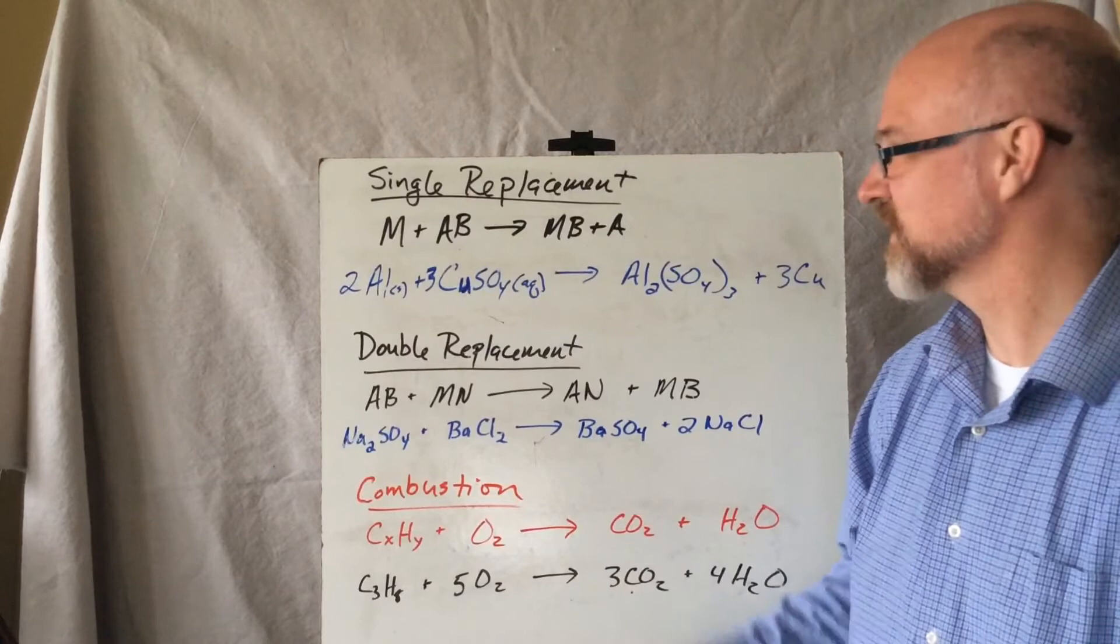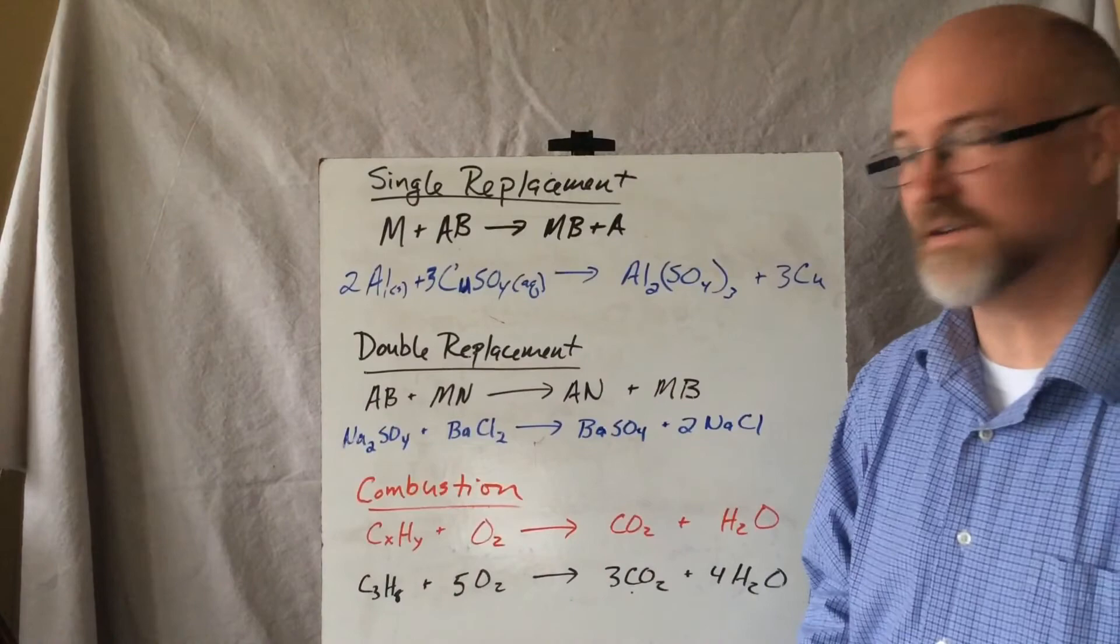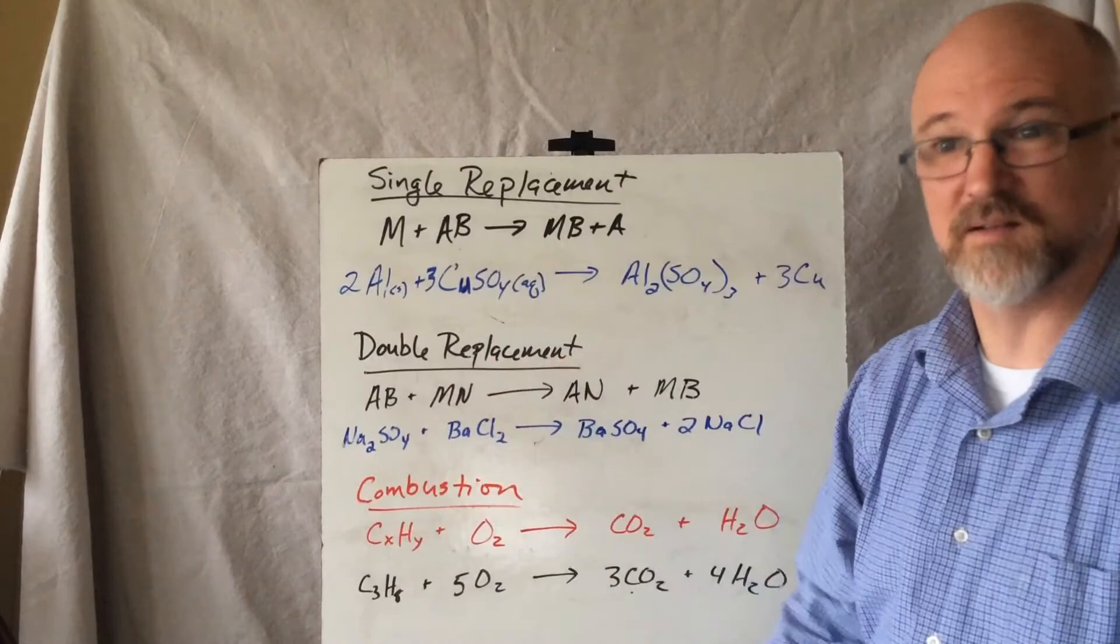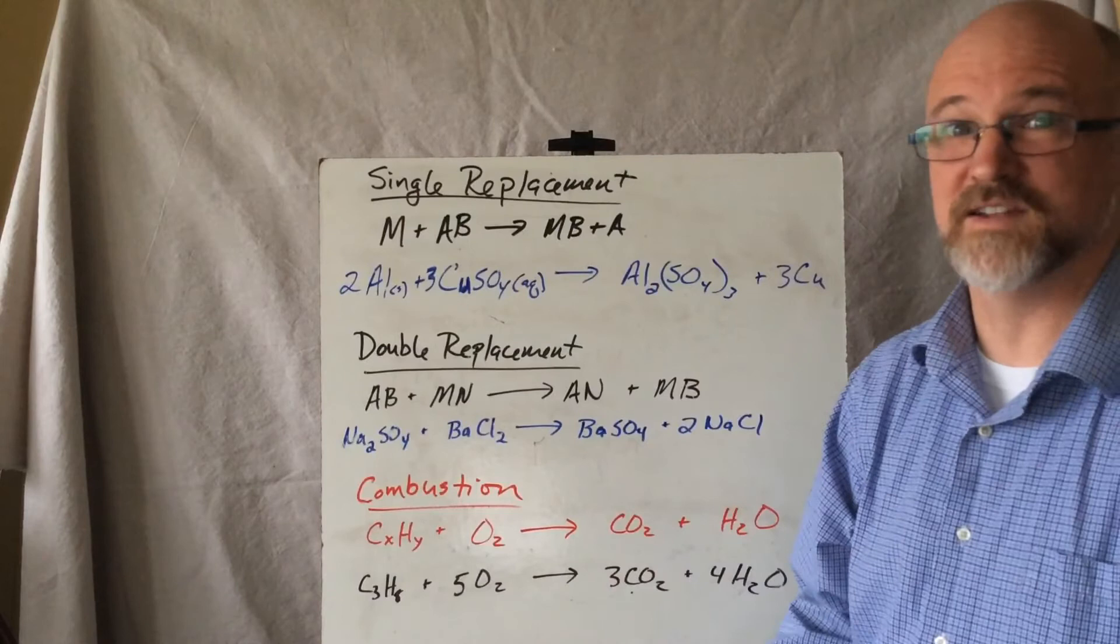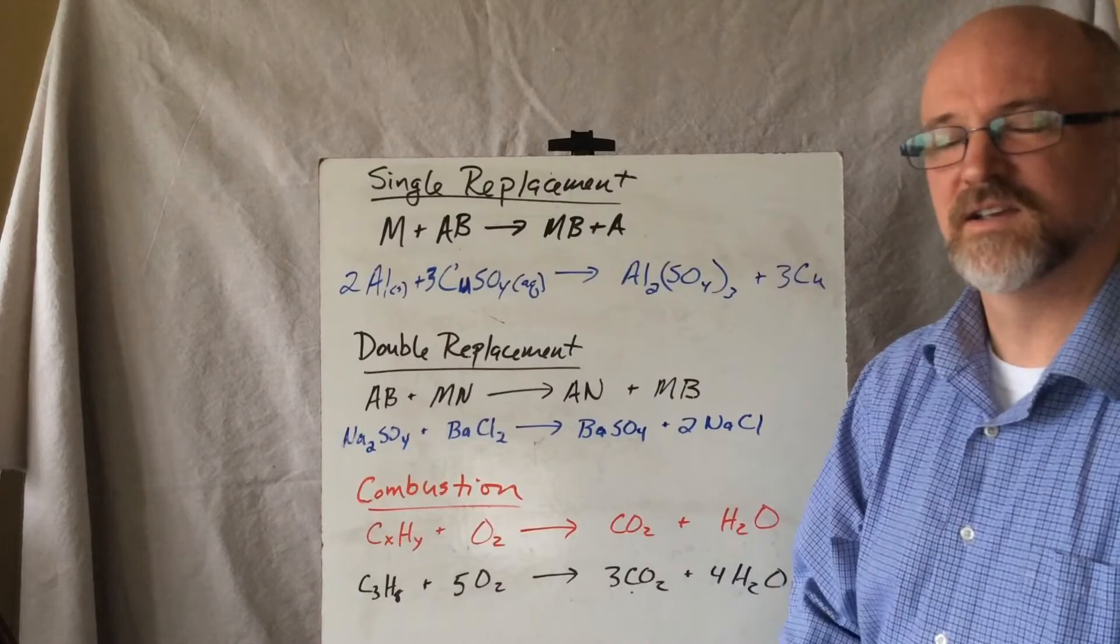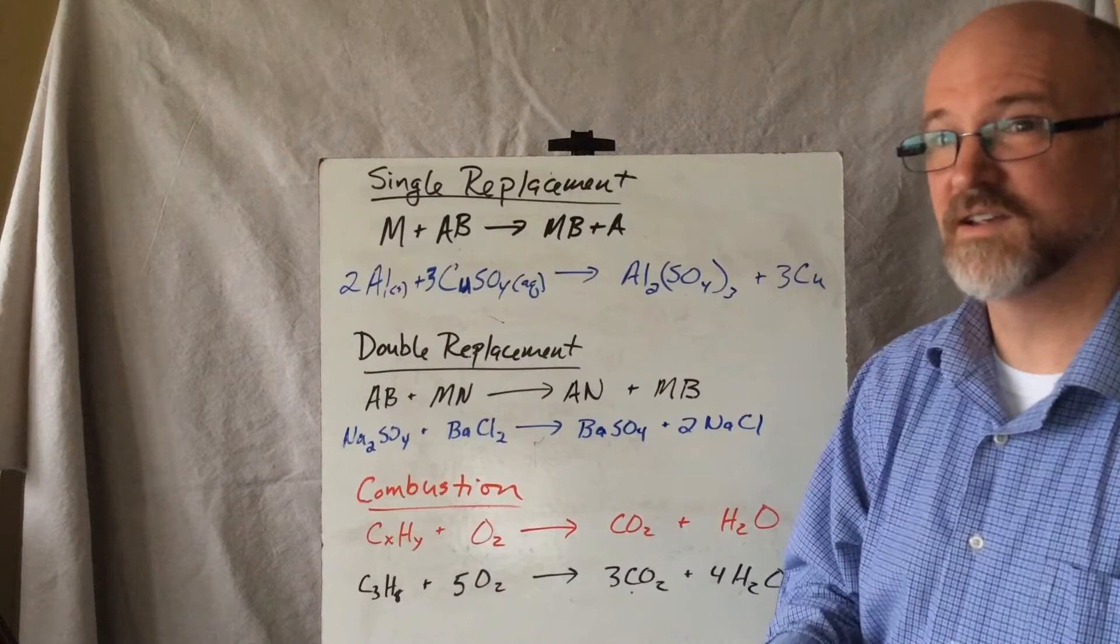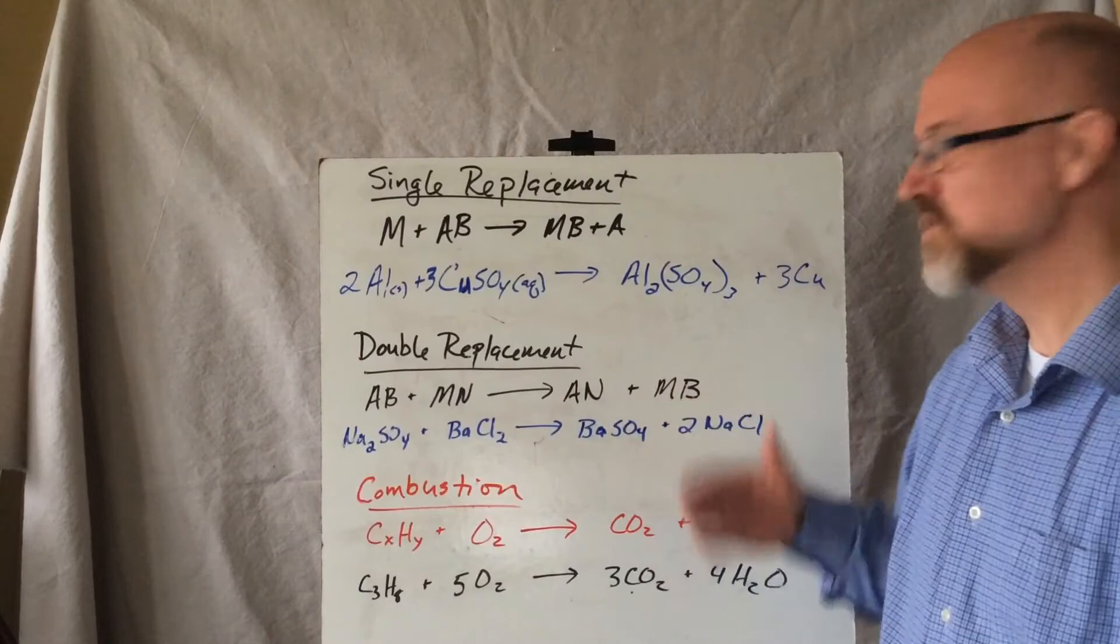Then you have double replacement. Double replacement is a case where you double date. I have two different compounds, some compound AB and some compound that's another metal with non-metal combination. This is the scenario where you go out double dating with your friend and you each have a date. But as the evening goes along, you're really hitting it off with your friend's date. You're talking about things you have more in common with, you're kind of connecting. And that might seem awkward, except it works out because your friend is really into your date. So it all works out. You end up with two new couples, two different pairings.